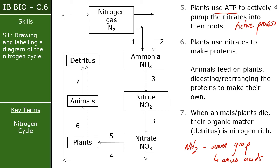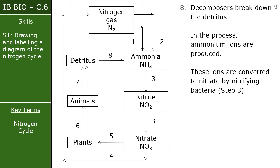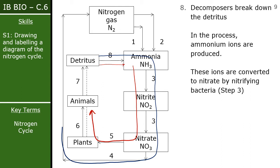Plants take up nitrates directly; animals feed on plants, digest them, and rearrange the nitrogen to create their own proteins. When both plants and animals die, they produce detritus — nitrogen-rich organic material left in the soil. This detritus gets converted back into ammonia and can either re-enter the inner cycle again or pass through the larger cycle back into nitrogen gas, depending on what is required within the soil environment.